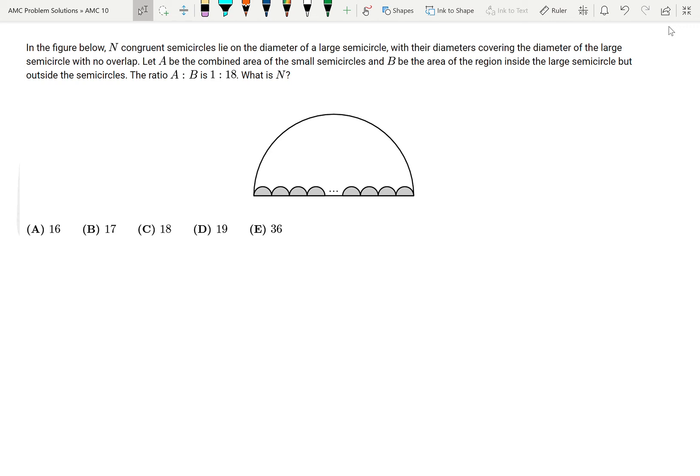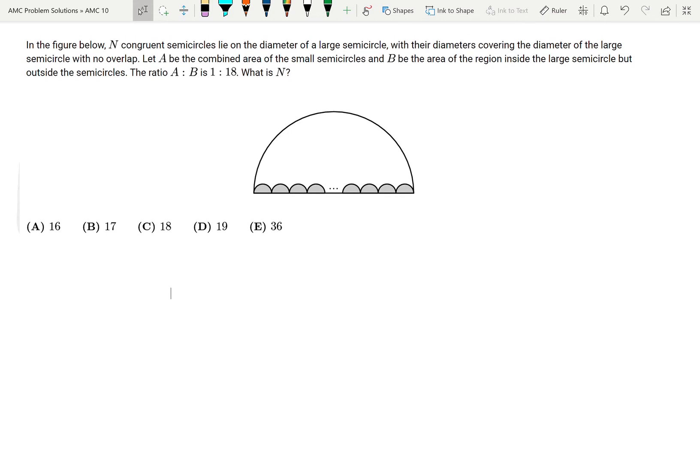In the figure below, n congruent semicircles lie on the diameter of a large semicircle, with their diameters covering the diameter of the large semicircle with no overlap. Let A be the combined area of the small semicircles and B be the area of the region inside the large semicircle, but outside the semicircles. The ratio A to B is 1 over 18.